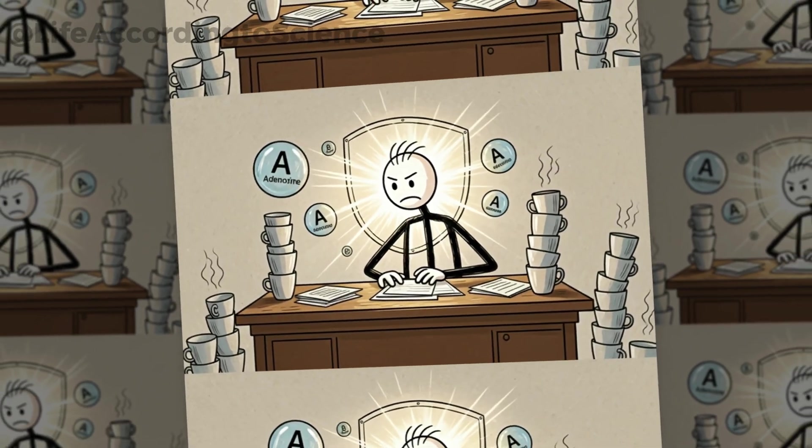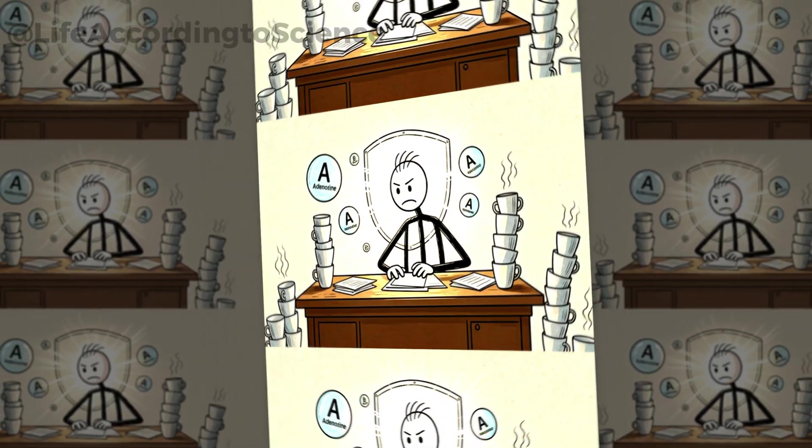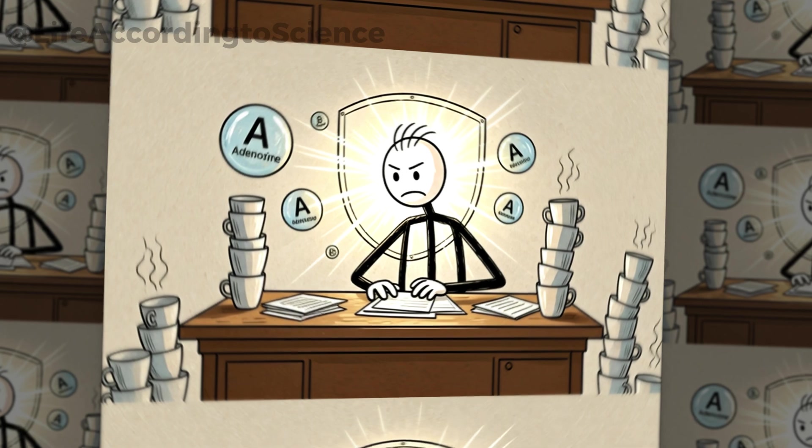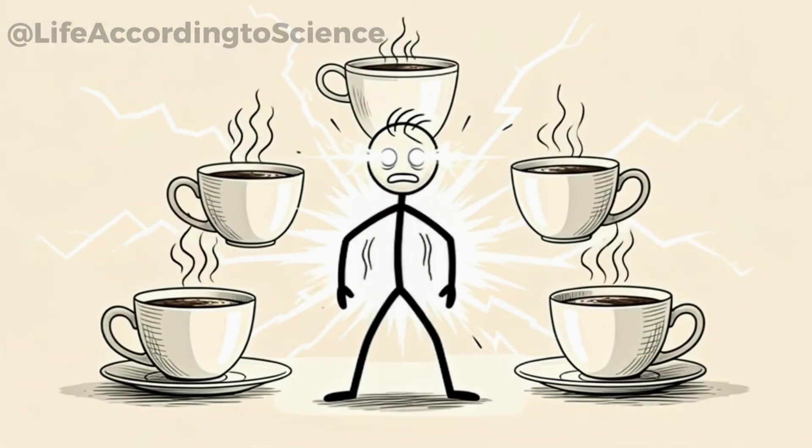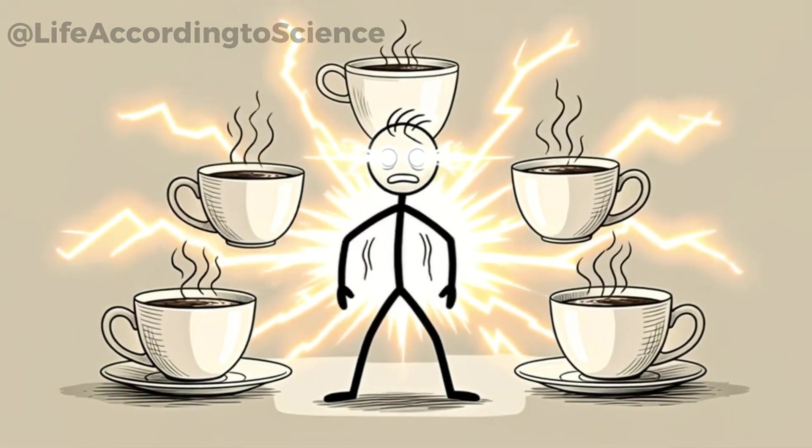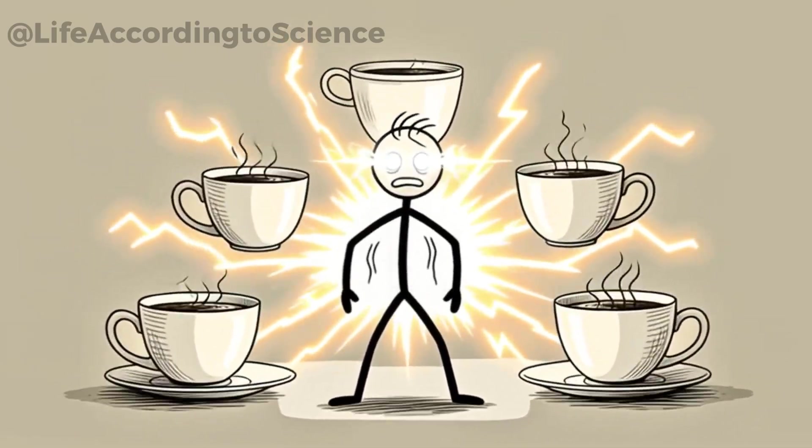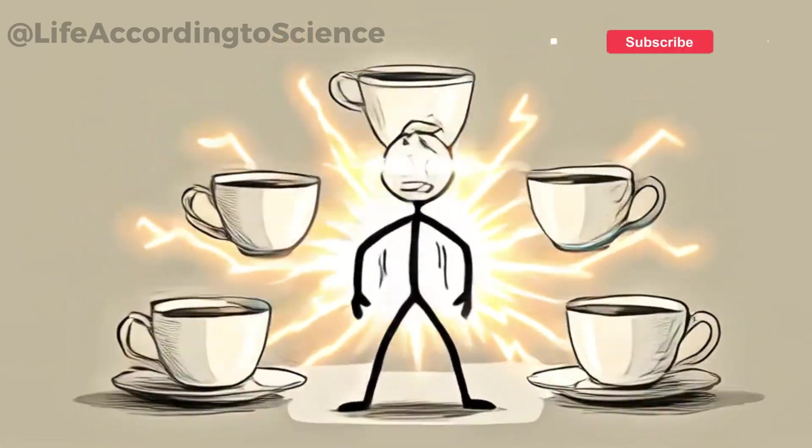Caffeine works by blocking adenosine, the chemical responsible for making you feel tired. With five cups a day, adenosine has no chance to do its job, leaving you wired most of the time.